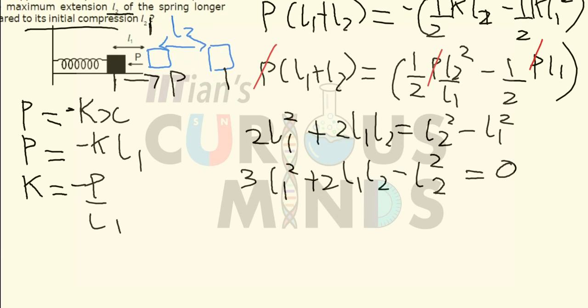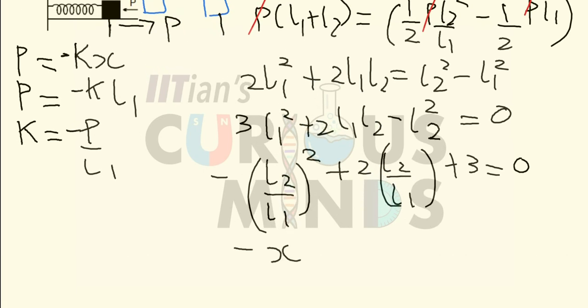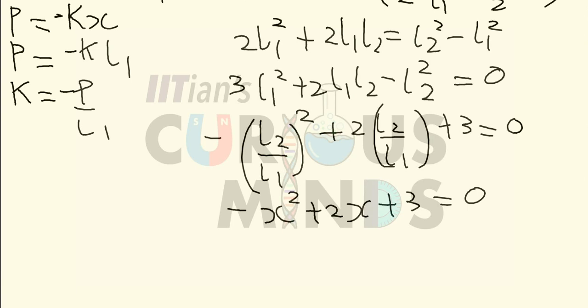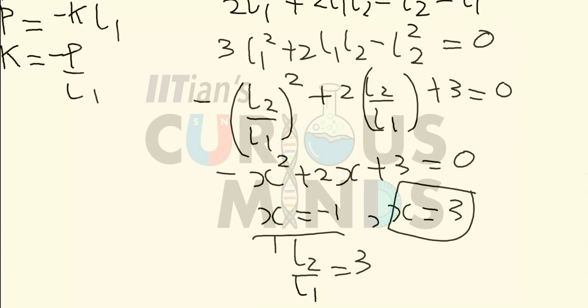To find the ratio l2/l1, divide through by l1 squared, substituting x = l2/l1. This gives minus x squared plus 2x plus 3 equals zero. Factoring, x equals either minus 1 or x equals 3. Since the ratio cannot be negative, x equals 3, so l2 over l1 equals 3 — the extension l2 is three times l1.